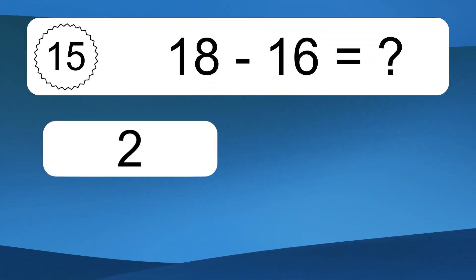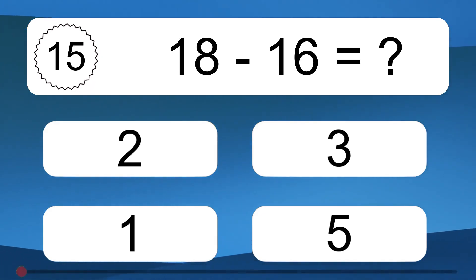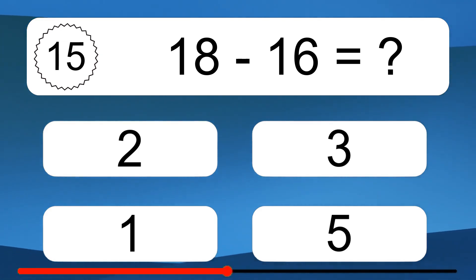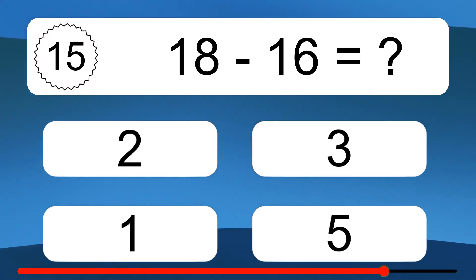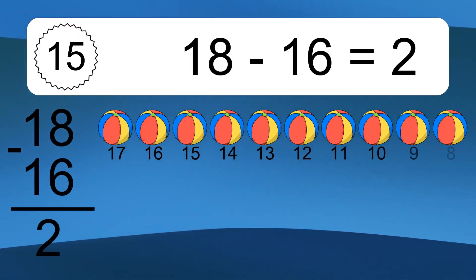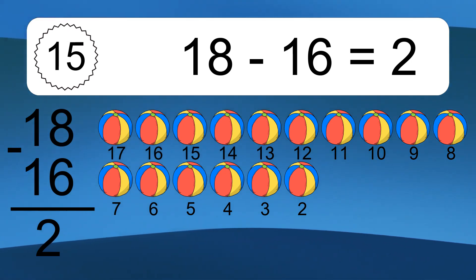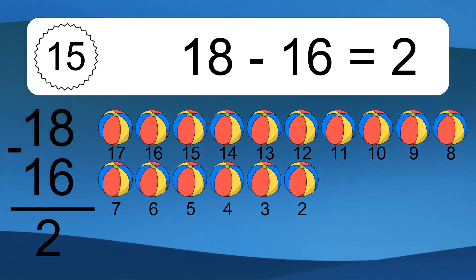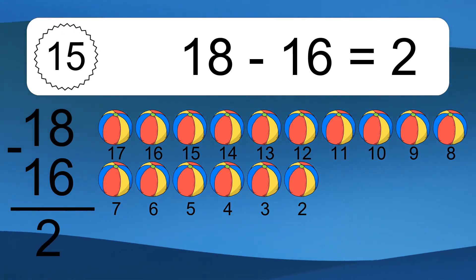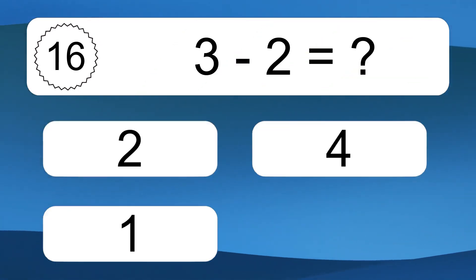18 minus 16 equals what? 18 minus 16 equals 2. Let's count it: 17, 16, 15, 14, 13, 12, 11, 10, 9, 8, 7, 6, 5, 4, 3, 2.